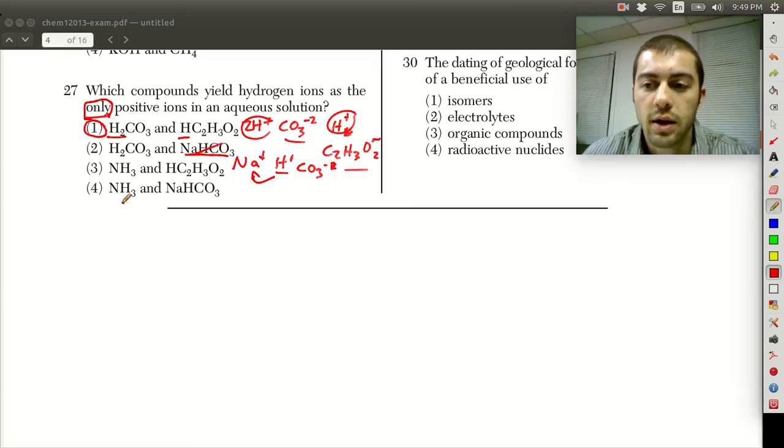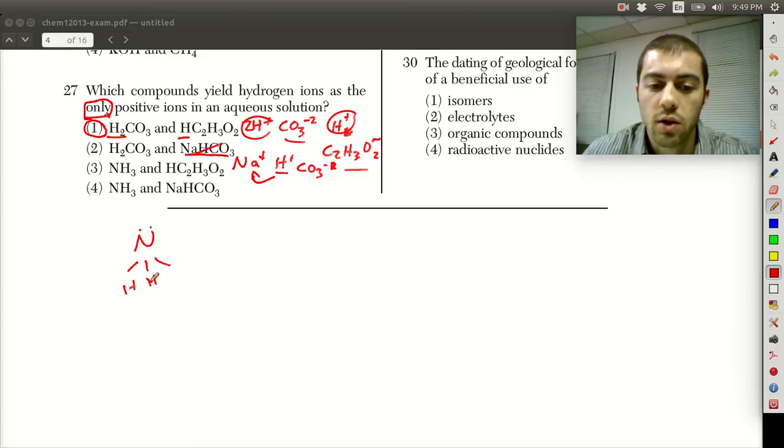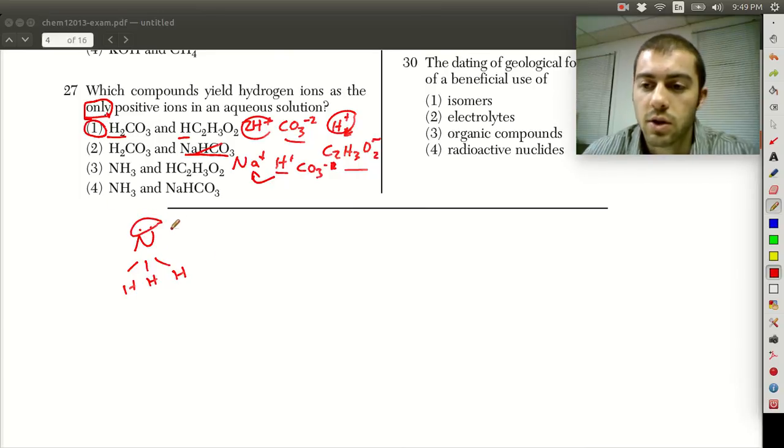NH3, this is not going to be an electrolyte. Remember the structure of NH3. NH3 would function as a Lewis base, but these hydrogen atoms are not going to break off into H+ ions because that's not what NH3 does. It has this lone pair of electrons that functions as a Lewis base if it donates this pair of electrons. Even though we have HC2H3O2 here, which was yielding positive H+ ions, the NH3 does not, so that means choices 3 and 4 are not going to work.